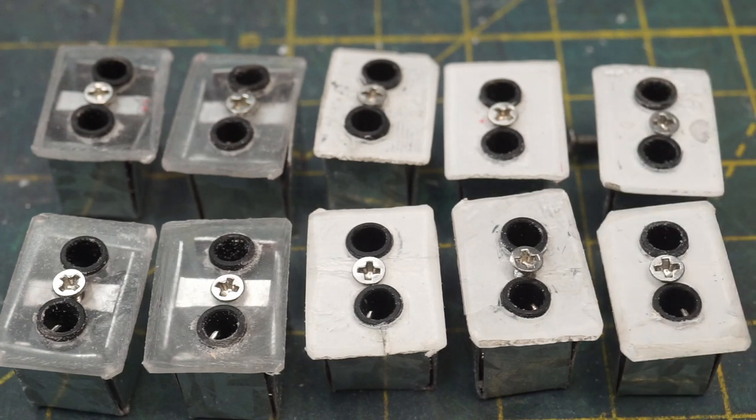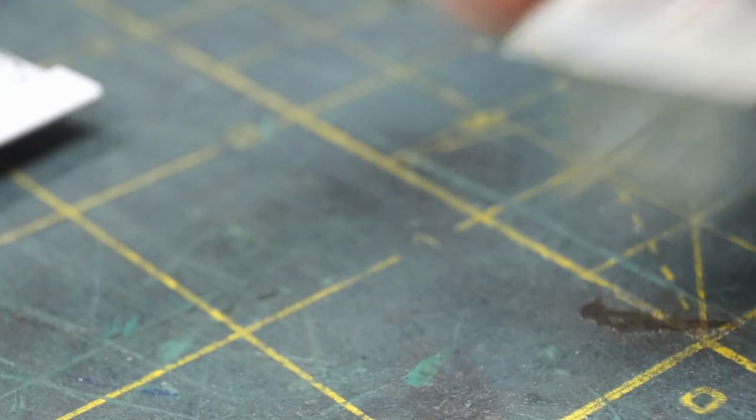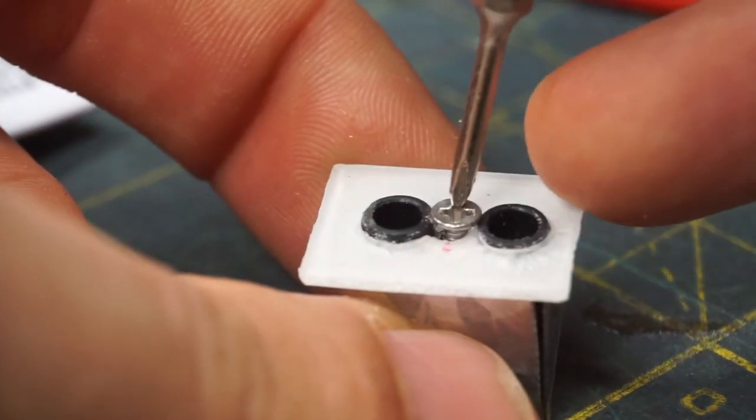I decided to leave a few of the box faceplates unpainted. They just look too cool for me to paint all of them, and I'll probably put these clear ones in the basement, or somewhere that they are less visible but still accessible. Now with the boxes made, it's time to wire them up.